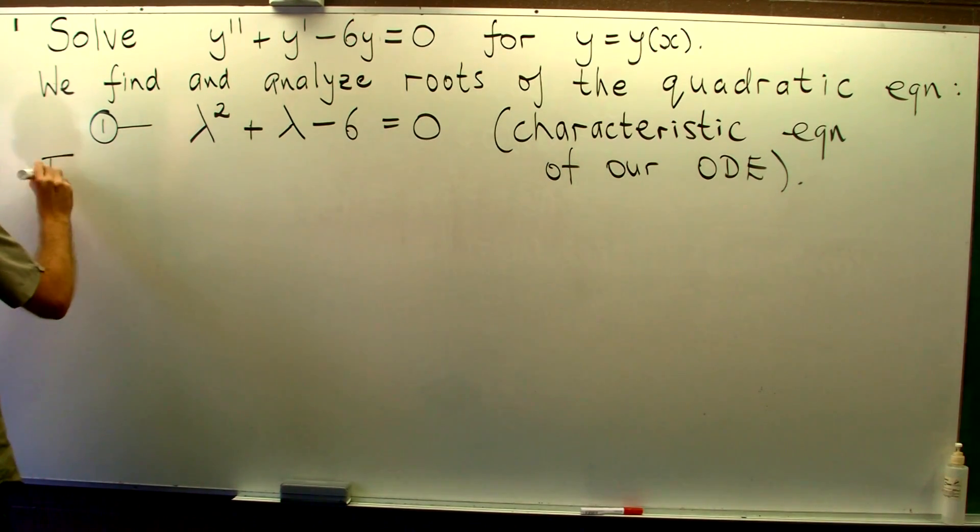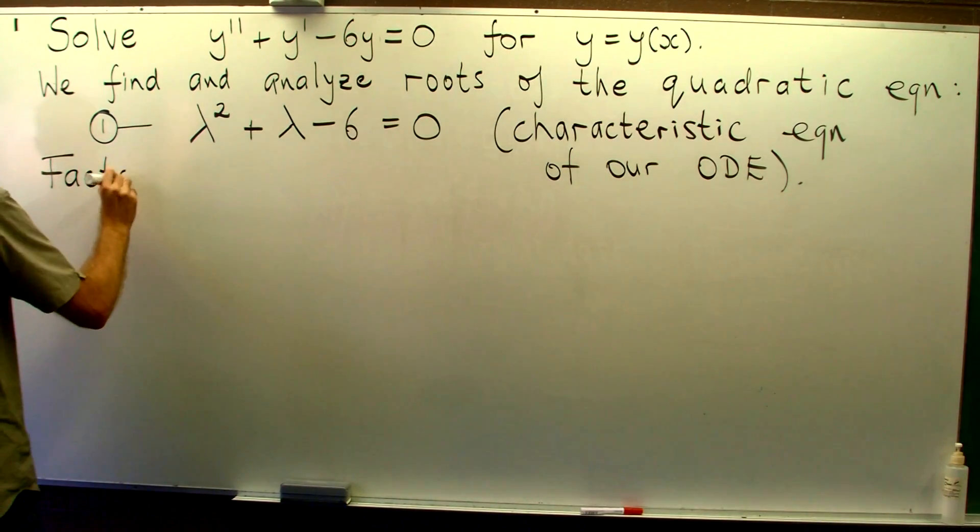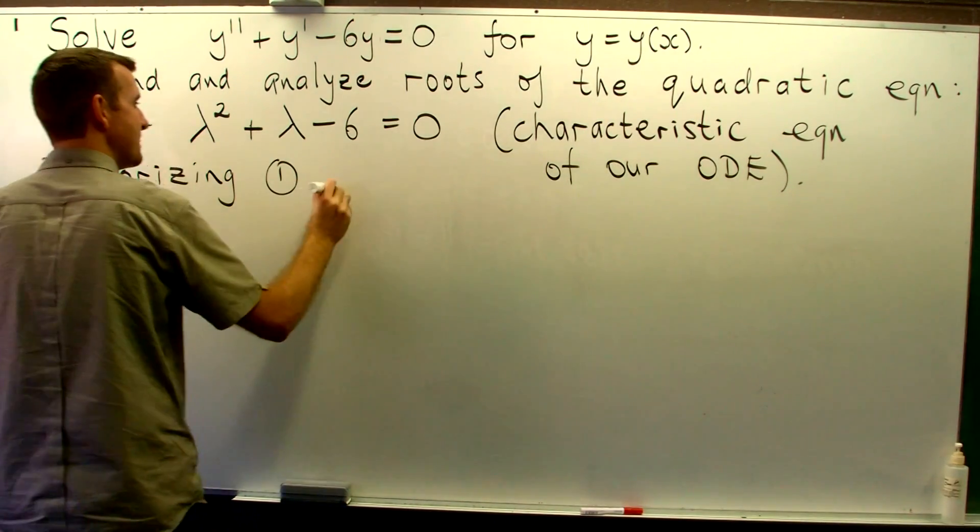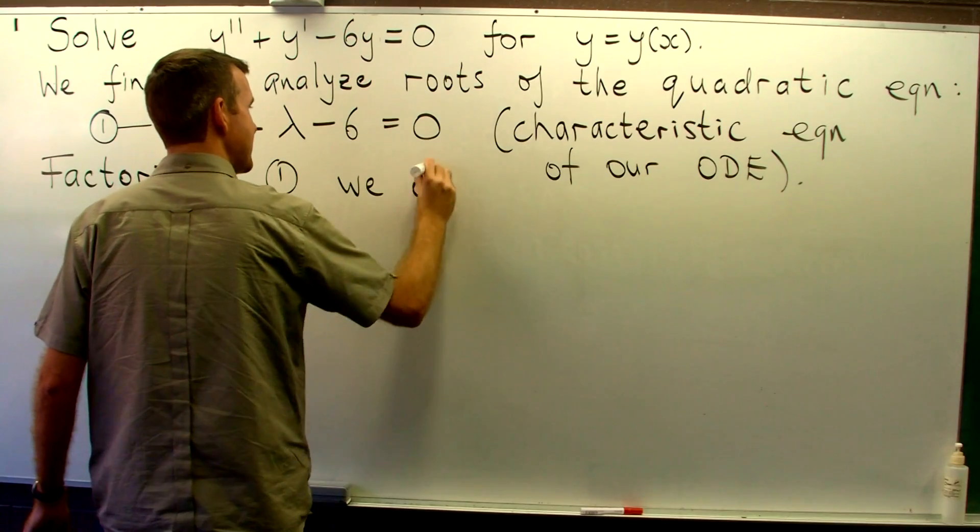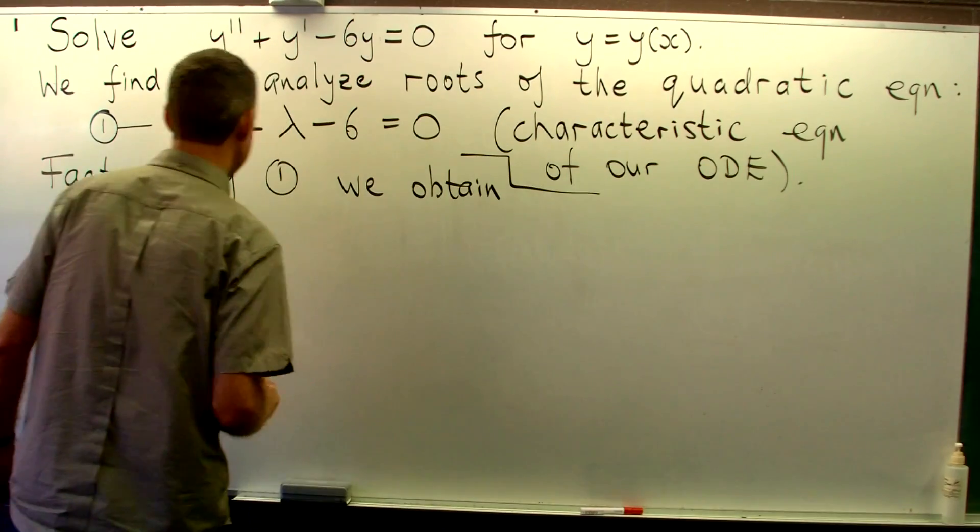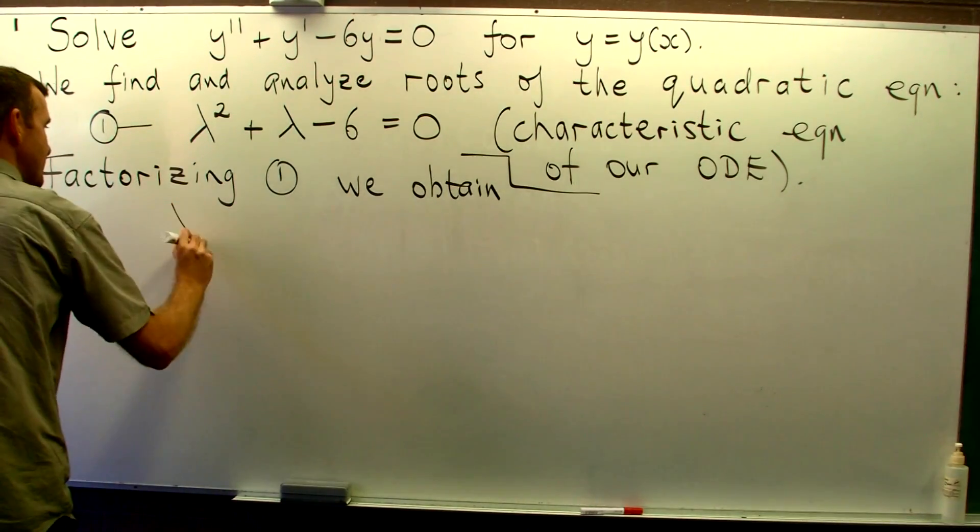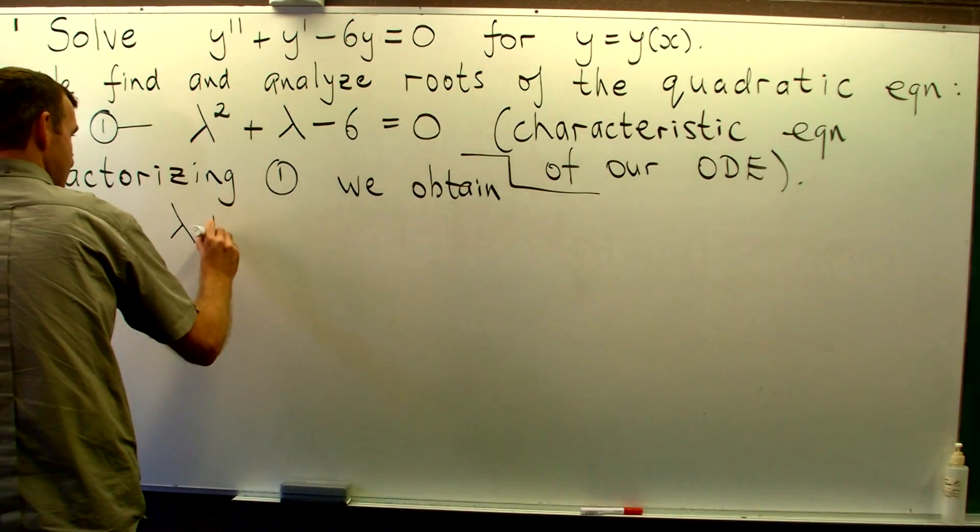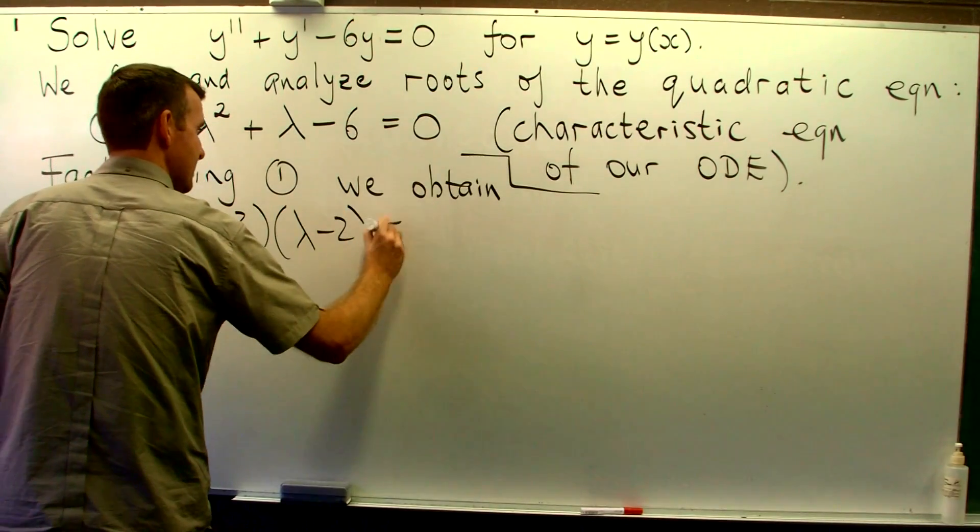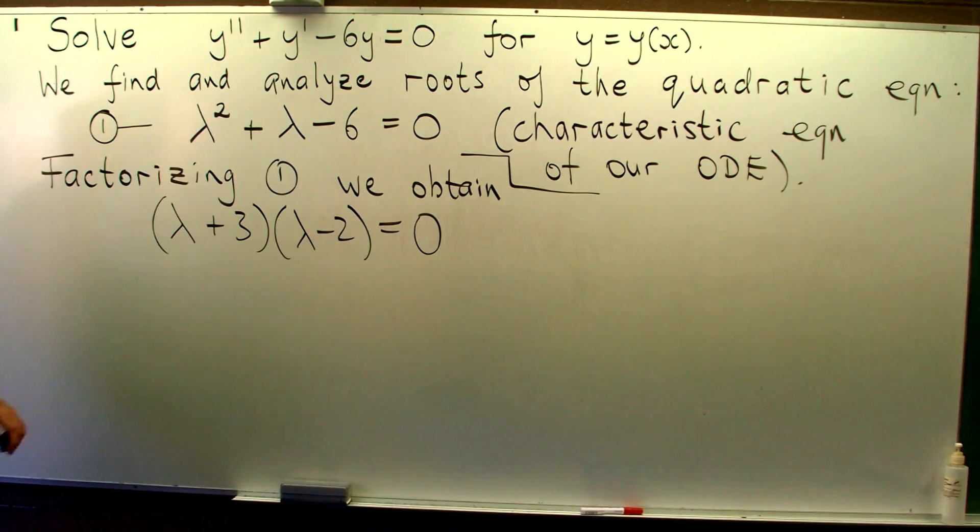If we factorise 1, we obtain the following. Alright, so here we've factorised, and we can solve now for the roots. The roots are going to be minus 3 and positive 2.